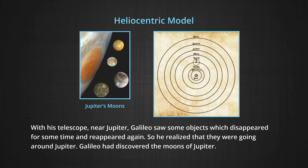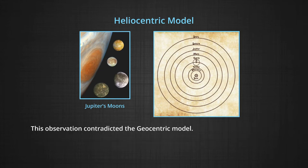With his telescope, Galileo saw near Jupiter some objects which disappeared for some time and then reappeared again. He realized that they were going around Jupiter. Galileo had discovered the moons of Jupiter. This observation contradicted the geocentric model.